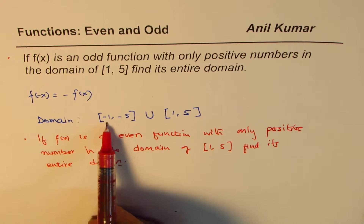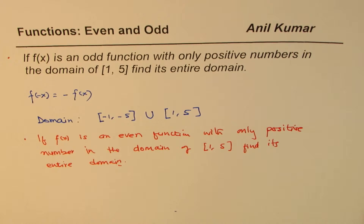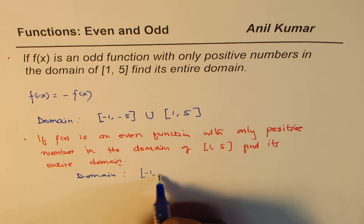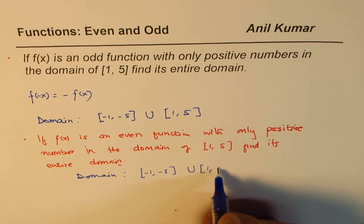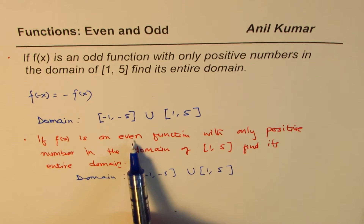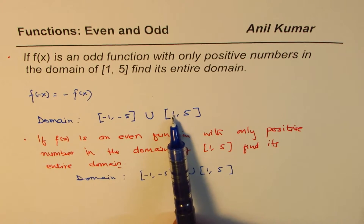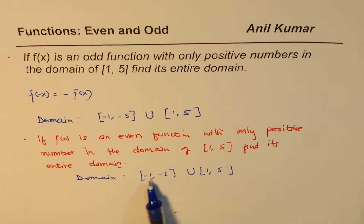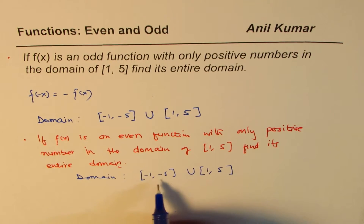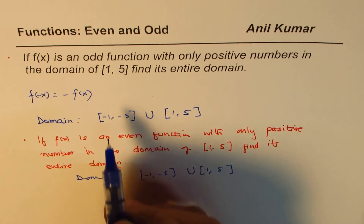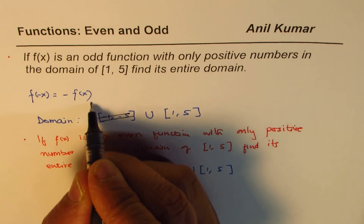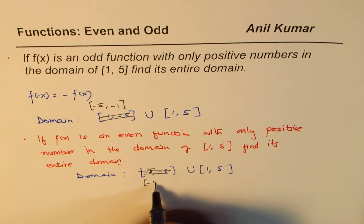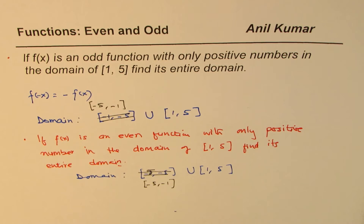Think about it — will the entire domain still be the same? The domain for this will also be minus 1 to minus 5 union 1 to 5. Since when it is even, it is symmetric about the y-axis, these points will be reflected and the x values will be correspondingly negative, between negative 5 and negative 1. Let me correct this: it should be written as negative 5 to negative 1, since negative 5 is on the left side.